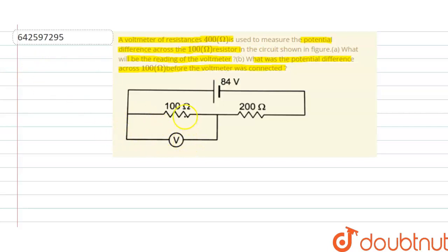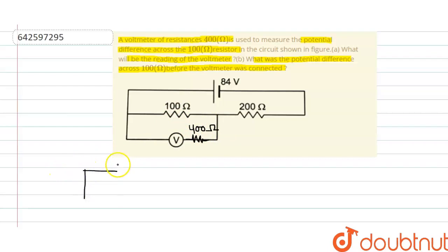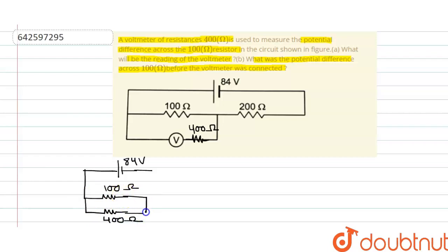So what is given: a voltmeter is connected across this 100 ohm resistance, and this voltmeter has 400 ohm resistance. The circuit has an 84 volt battery, with 100 ohm and 400 ohm in parallel combination, and a 200 ohm resistor in series.